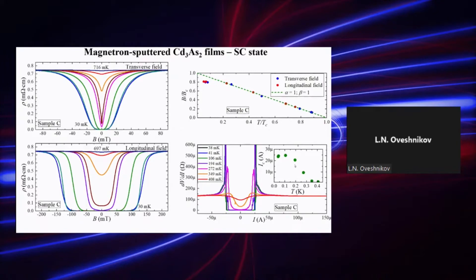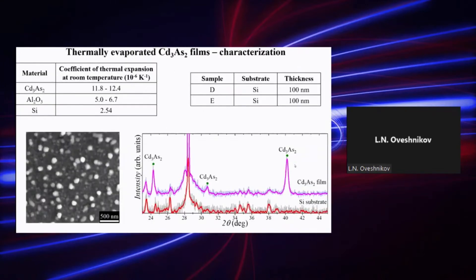At this stage, we were not sure where this superconductivity comes from, because there are at least one work where epitaxial cadmium arsenide film was studied in the same temperature range. However, no superconductive transition was observed.